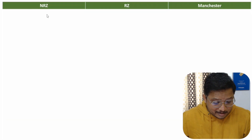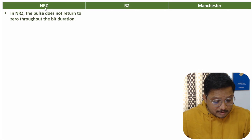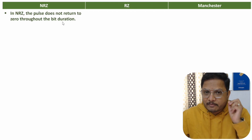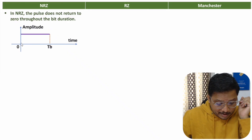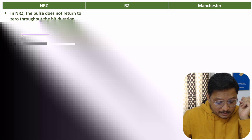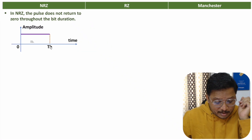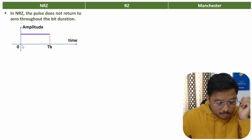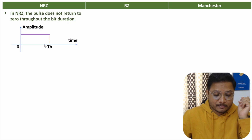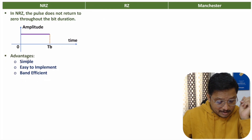Let me explain NRZ, that is Not Return to Zero. In NRZ, the pulse does not return to zero throughout the duration. Looking at the waveform — horizontally we have time and vertically we have amplitude — from zero to bit duration Tb, the amplitude is constant and does not return to zero throughout the bit duration.